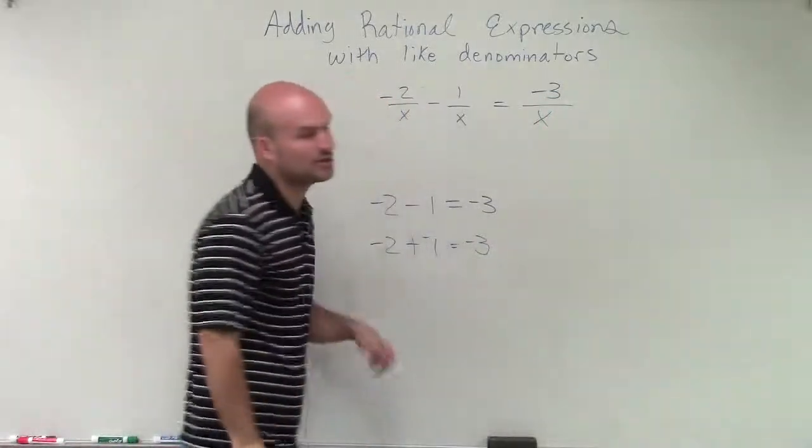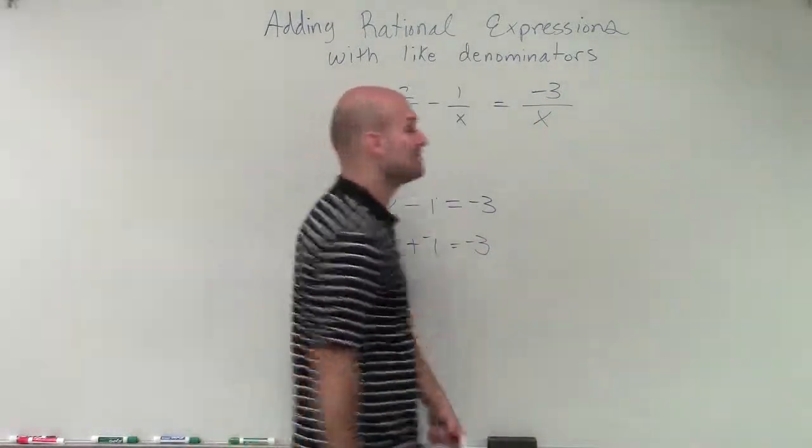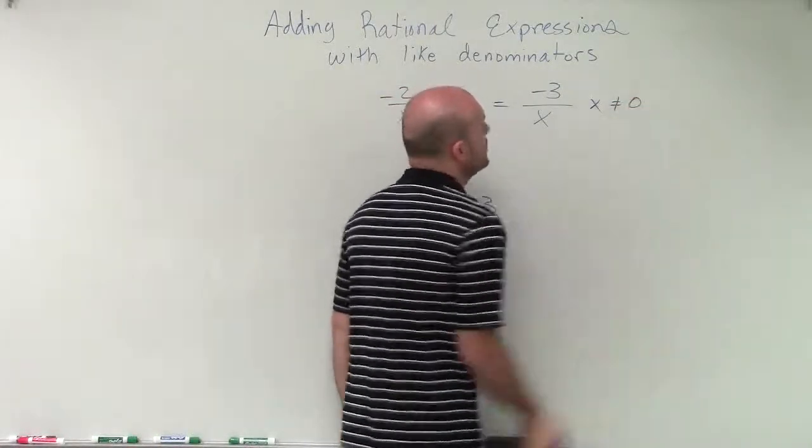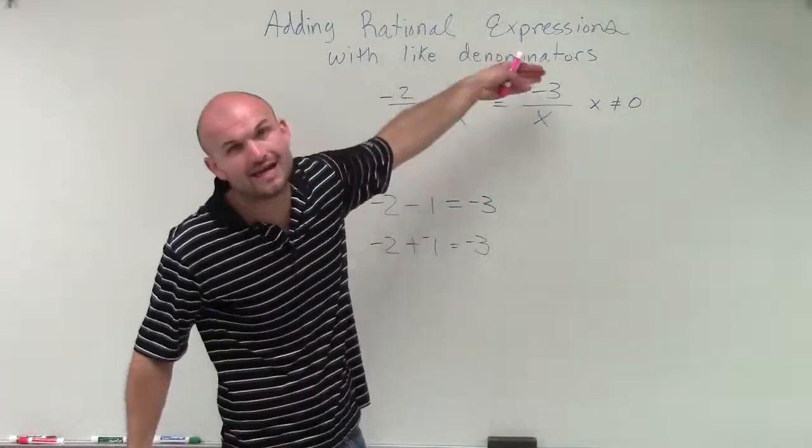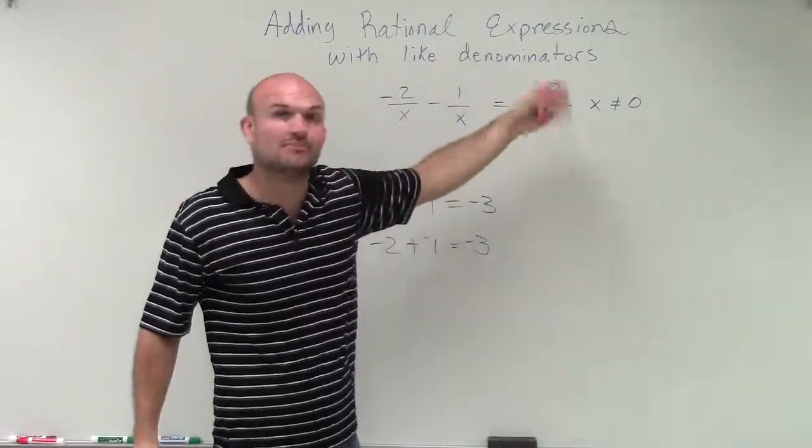Therefore, that's how we're going to combine our numerators. So we'll have negative 3 divided by x. If I wanted to write a restriction, I would say x cannot equal 0, because the only value that x cannot be is 0, because we can't divide negative 3 by 0.